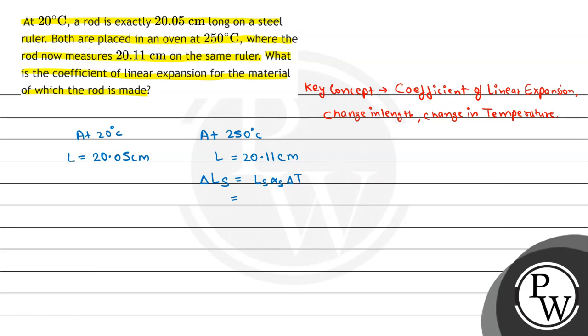So now look, the new length is 20.11 cm when the coefficient we have is 11 into 10 to the power minus 6, and then the change in temperature is from 250 degrees Celsius to 20 degrees Celsius. So after solving, this is 0.0508 cm.